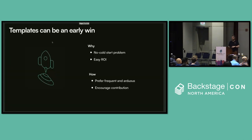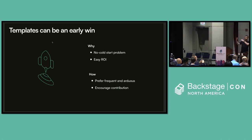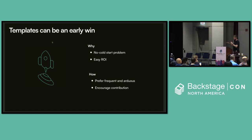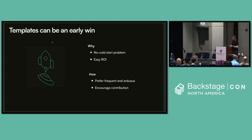First key learning: templates can be a really easy and early win, and probably a good place to start with Backstage. If you write a template, put it into Backstage, send somebody a link, they can run it and get value straight away — there's no cold start problem. This is in contrast to the catalog, which is a bit like Facebook: there are network effects, and the more stuff in the catalog, the more reason people feel to put stuff in. Templates let you get started straight away.